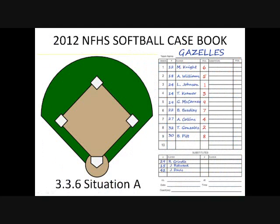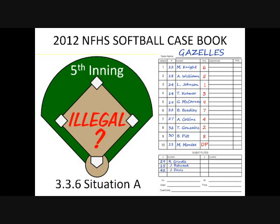Now we'll take a look at a couple of situations out of the 2012 National Federation of High School Softball Casebook. Rule 3.3, Article 6, Situation A states: In the fifth inning, M. Monty enters the game as the DP and is placed at the end of the batting order. What's the ruling? Illegal. The DP must be announced prior to the start of the game with her name entered on the starting lineup.